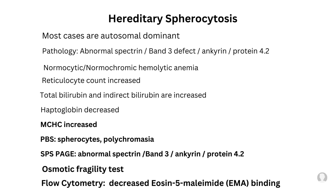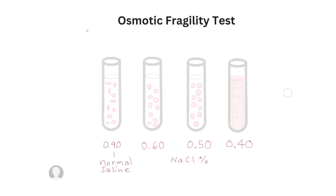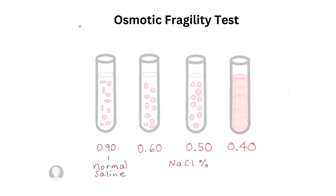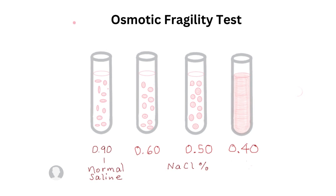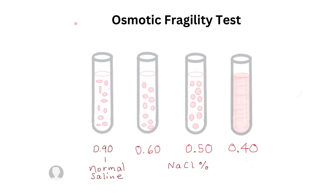These are the highlights of hereditary spherocytosis. Note that the MCHC is increased — this is the only anemia with this feature. You will also see spherocytes and polychromasia on the peripheral blood smear. Using serum protein electrophoresis, you will see abnormal spectrin, band 3, ankyrin, and protein 4.2. The osmotic fragility test is a historical test still used in some reference labs for diagnosing hereditary spherocytosis.